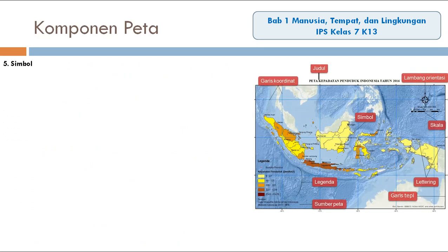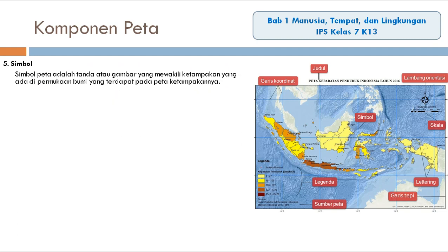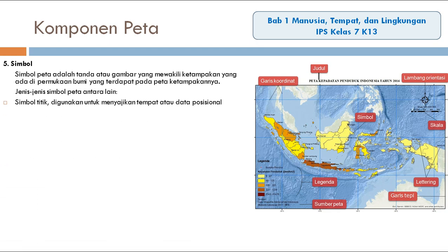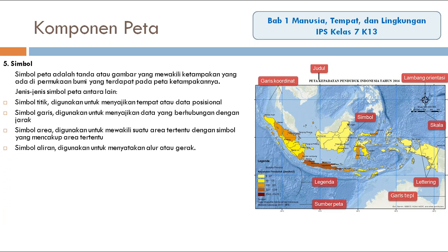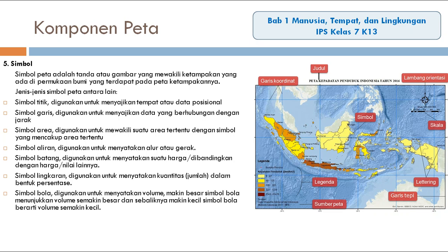Komponen berikutnya adalah simbol. Simbol PETA adalah tanda atau gambar yang mewakili ketampakan yang ada di permukaan bumi yang terdapat pada PETA. Simbol PETA bisa dibedakan ke dalam beberapa jenis: simbol titik, simbol garis, simbol area, simbol aliran, simbol batang, simbol lingkaran, simbol bula, dan simbol warna. Contohnya di gambar ini yang ditunjukkan adalah simbol warna.